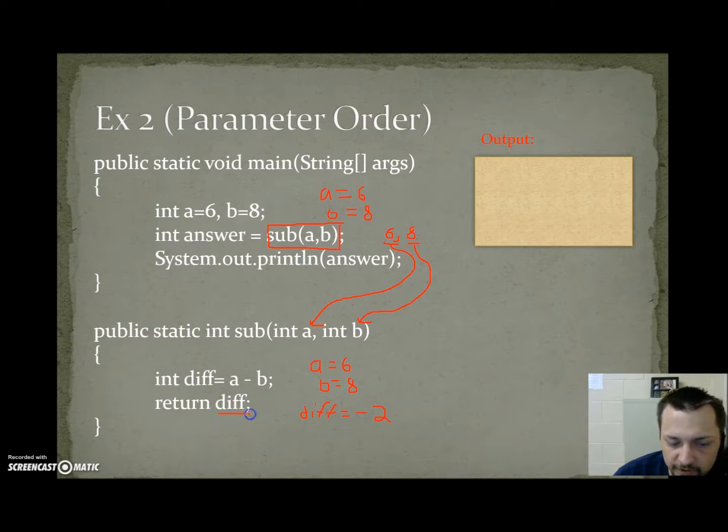So here we're returning diff, but what we're actually sending back is the value of diff, which is minus 2. So sub a comma b gets replaced with minus 2. Answer stores minus 2, and then we print minus 2, giving us an output of minus 2.